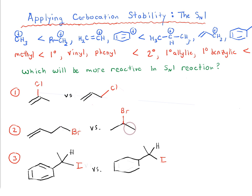In previous videos, we talked about some of the different factors which influence carbocation stability — primarily substitution pattern and resonance, as well as adjacent lone pairs, but that's not going to come up in today's video. What I've put here is a relative ranking of the different carbocation stabilities, and we're going to apply this to answer some fairly simple, straightforward SN1 questions.